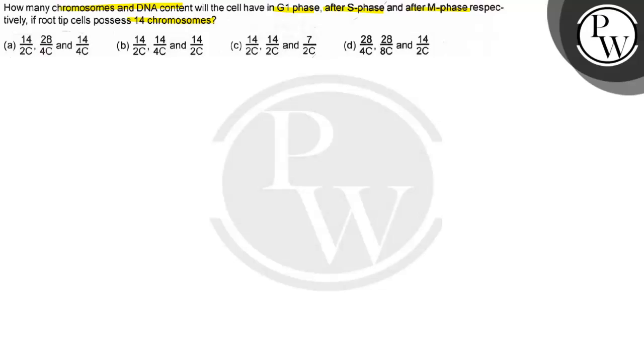Option C says 14 chromosomes 2 chromatids, 14 chromosomes 2 chromatids, and 7 chromosomes 2 chromatids.